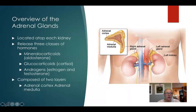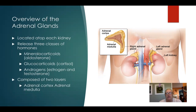Moving on with our endocrine system lectures, we're moving on to our adrenal glands. We have two adrenal glands, located on top of each of the kidneys — one over the right and one over the left kidney. The adrenal glands are going to release three different classes of hormones: the mineralocorticoids, and the main mineralocorticoid hormone in humans is called aldosterone; glucocorticoids, the main one in humans is cortisol; and also androgens, which are sex hormones — very weak sex hormones.